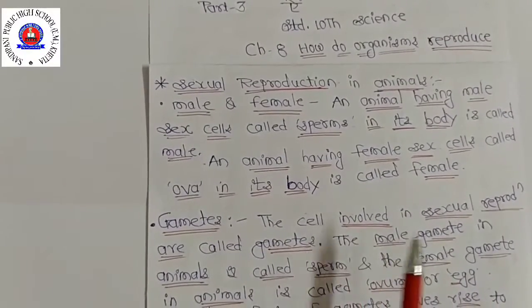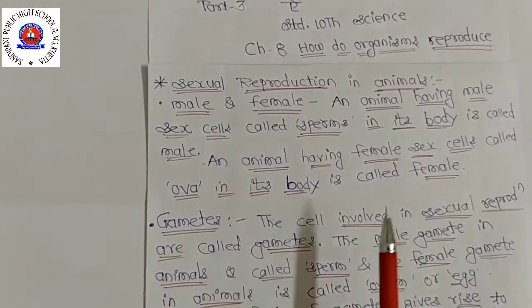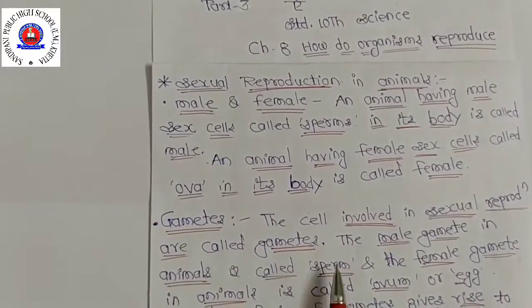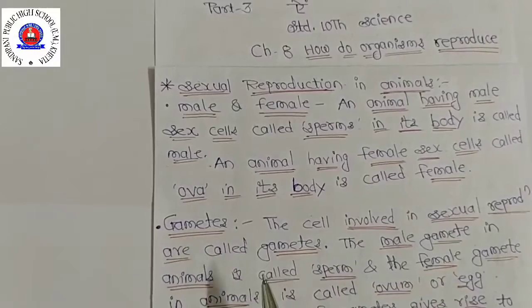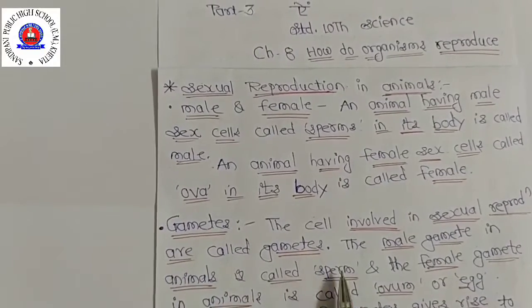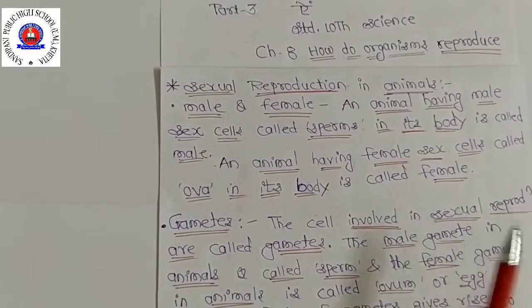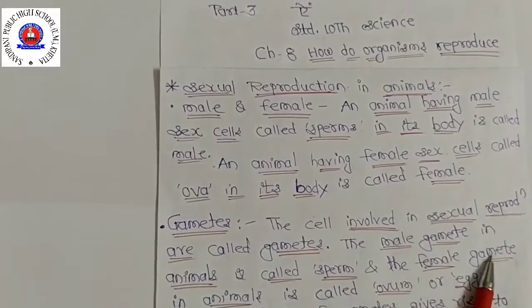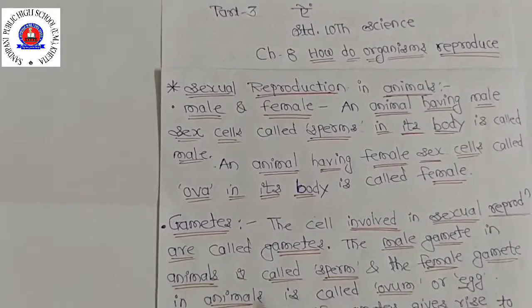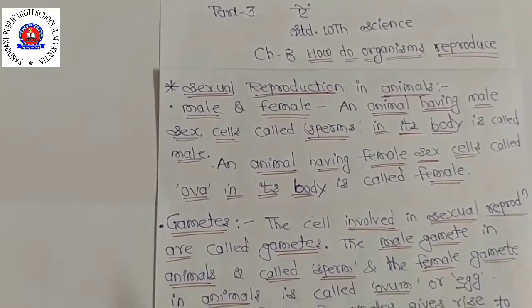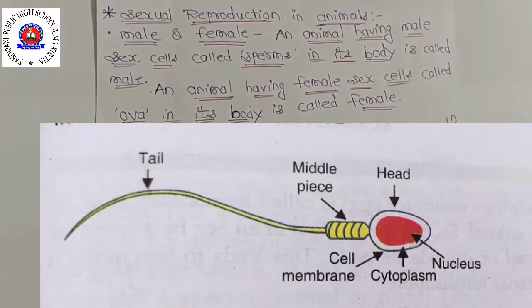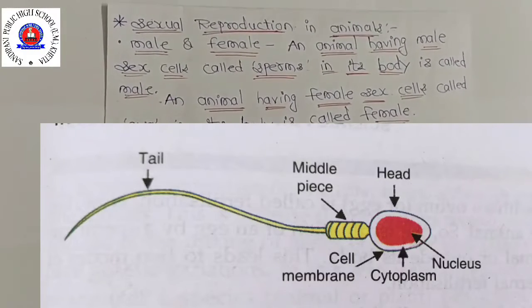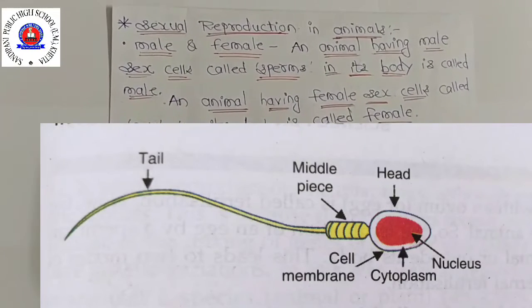Gametes are of two types: male gametes and female gametes. The male gametes in animals are called sperm, and the female gametes in animals are called ova or eggs.